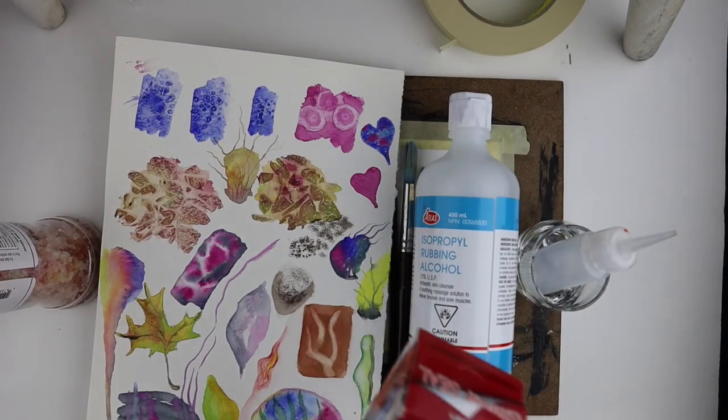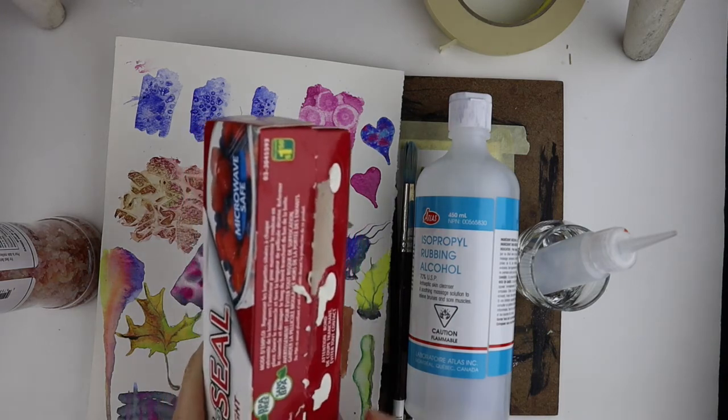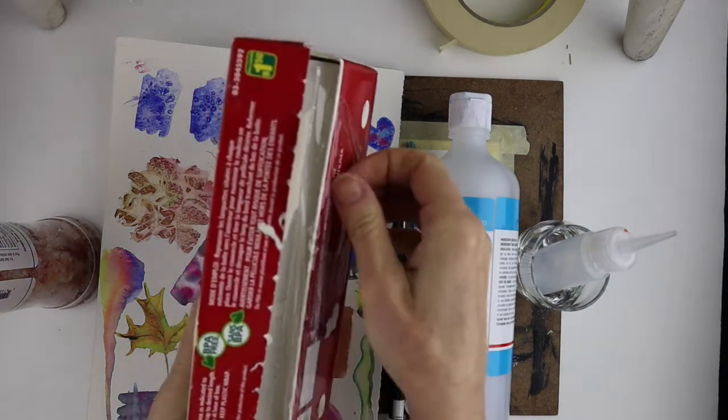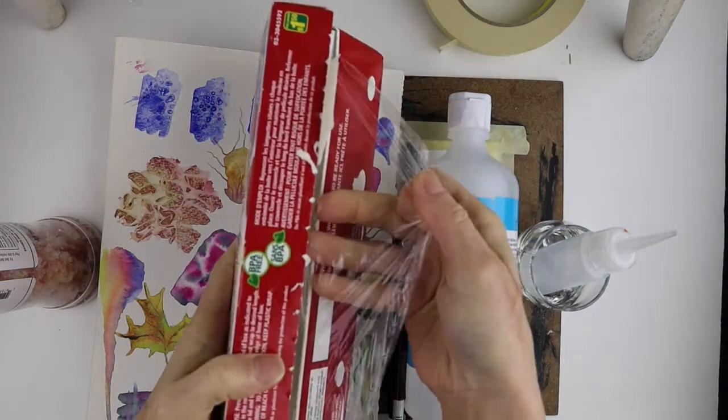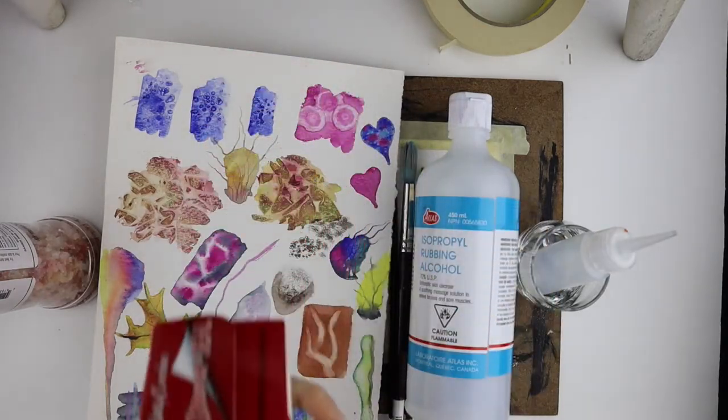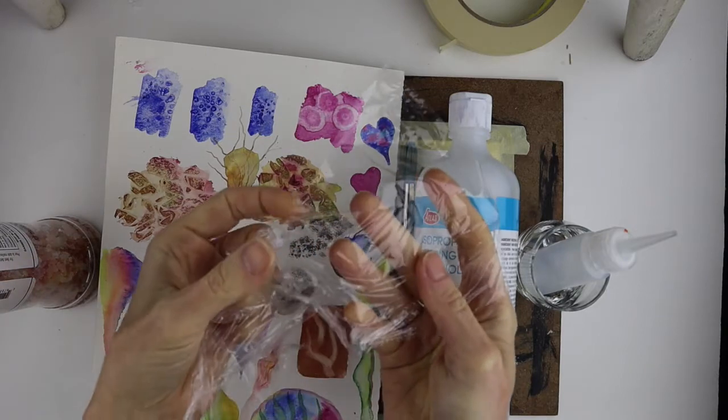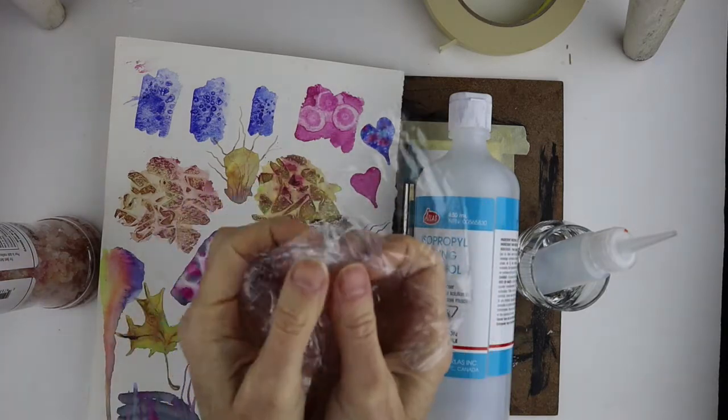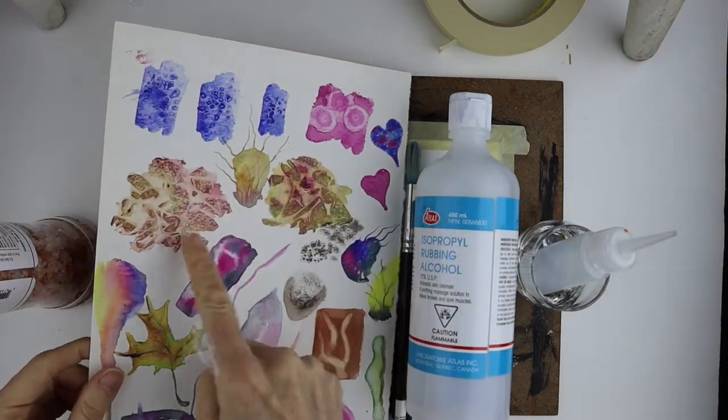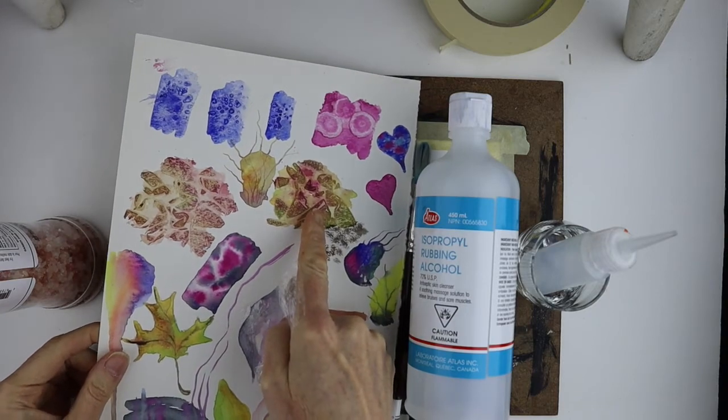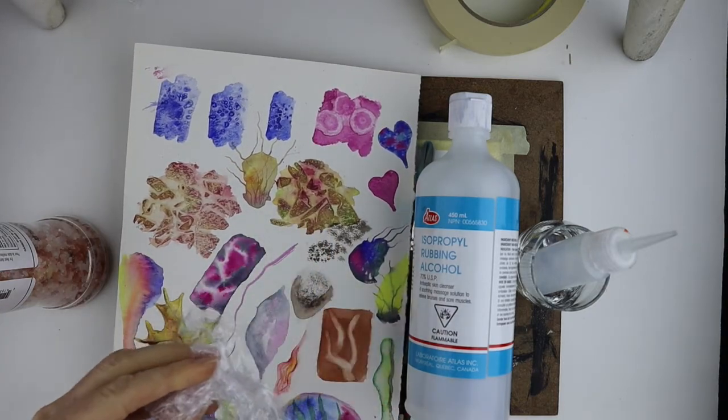The other thing we're going to be using during the demo is saran wrap. So you can just get some of this at the dollar store or the grocery store and you're just going to need some little pieces of saran wrap. When you crunch it up you're going to get some really cool textures like that. So I'm going to be demonstrating how to do that.